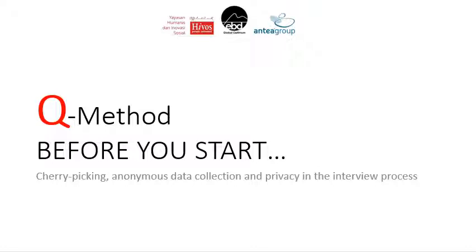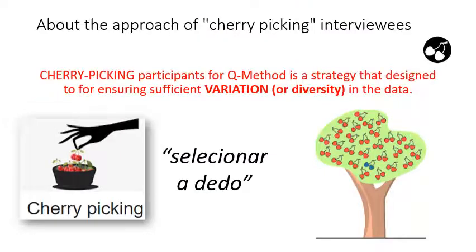In particular: cherry picking, the need for data to be anonymous, and for the interview process to be conducted in a private setting. Cherry picking — you must have heard of cherry picking and been instructed to apply it in the interview process for the Q method. But what does this mean? In English, cherry picking is when you're selective.